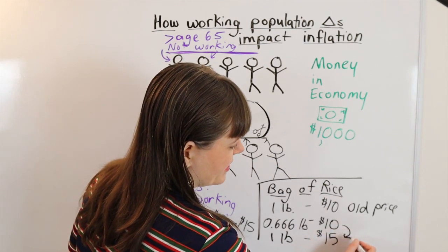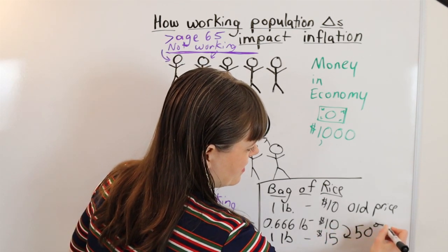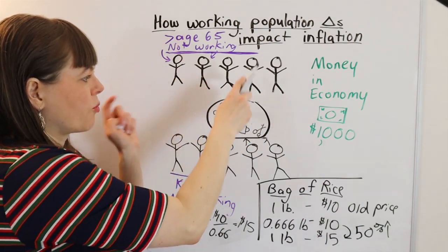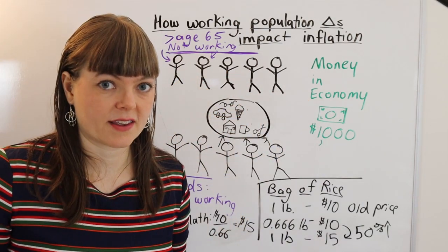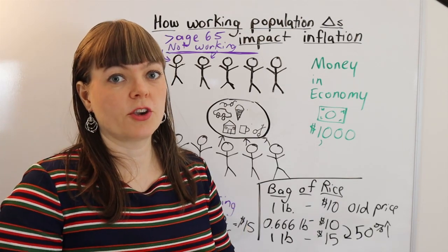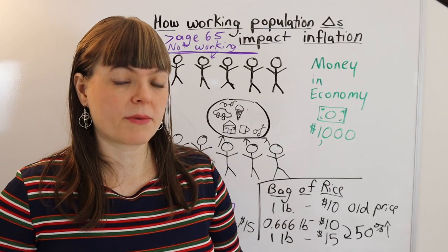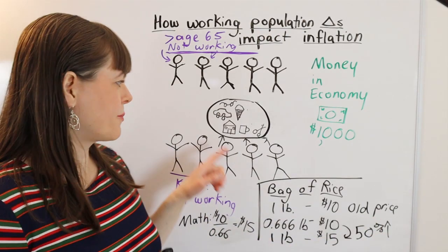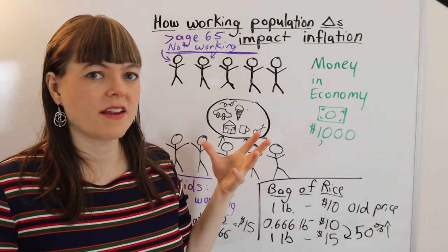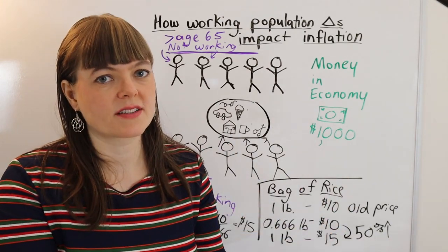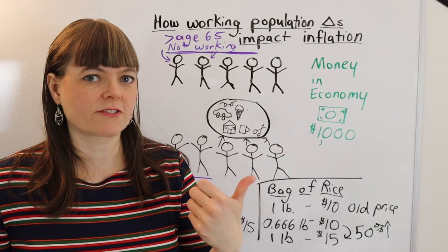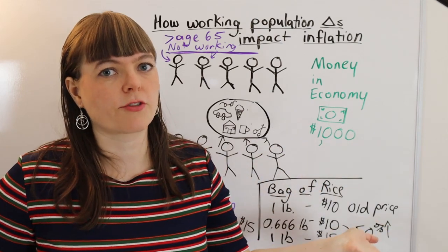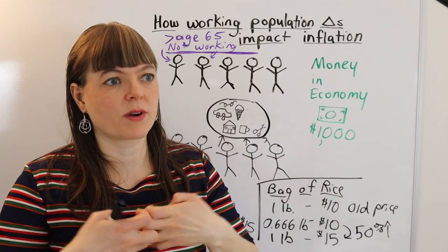Going from $10 to $15 — that's actually a 50% increase in prices in response to these two people no longer working and the pool of stuff shrinking. So that's just a quick exercise showing you that, yes, the percentage of the population working to create stuff can have an impact on inflation. Another thing to point out is that for a lot of stuff that we create, it has to be created in the moment that it's actually consumed. Like, you can't have a doctor's visit that the doctor creates today and you store it up to be used two years from now — that doctor's visit needs to be used in the moment when it's created.